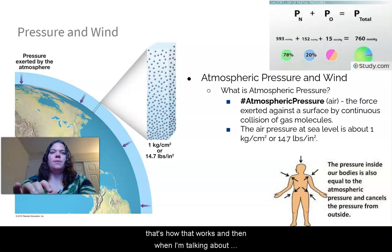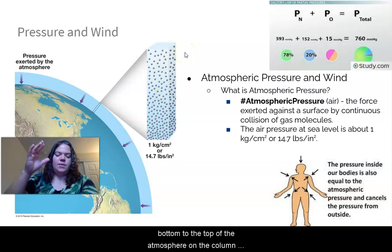When I'm talking about the continuous gas molecules exerted on a surface, these are all those gas molecules from the bottom to the top of the atmosphere, all in the column, that force all the way downwards. That's what we're talking about when it comes to pressure.